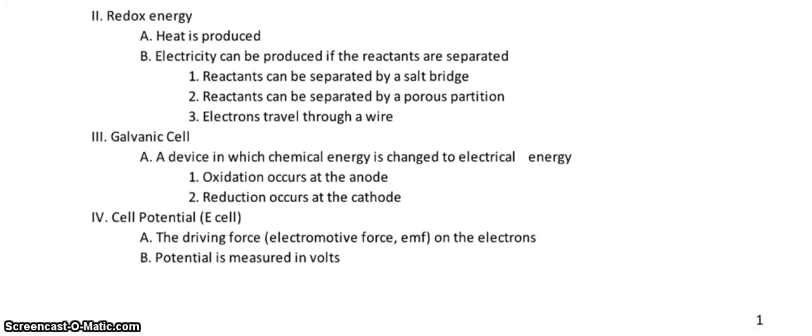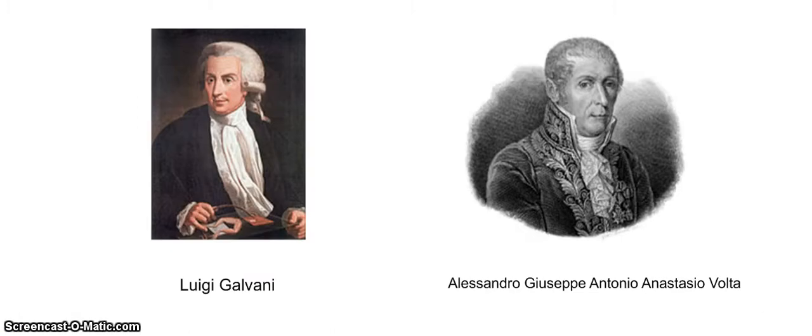Now we have the cell potential. The driving force on the electrons is measured in volts. Here are two of the scientists. Luigi Galvani, an Italian, was the one that first discovered this idea of these flow of electrons. He actually made the first cell. If you do a little background reading on him, he actually used frog legs, believe it or not. He discovered these frog legs will conduct electricity. And finally, thank goodness, he found other ways to do it.